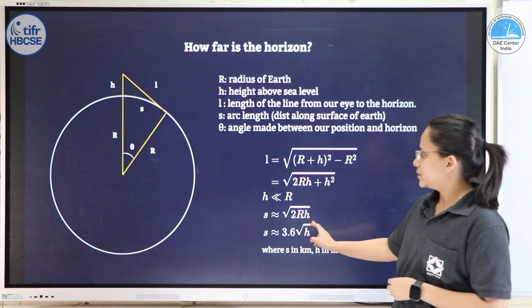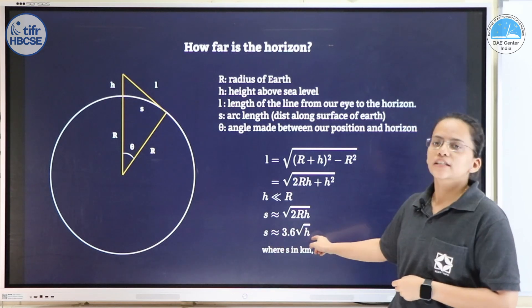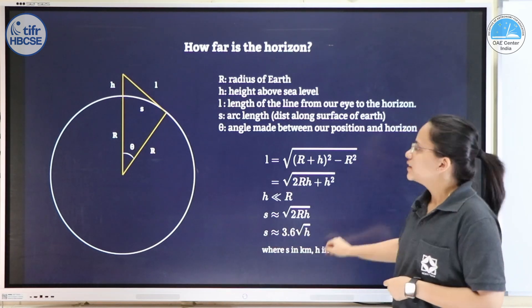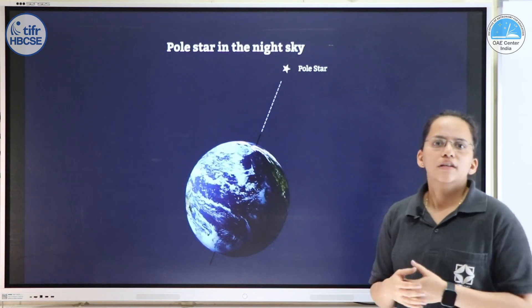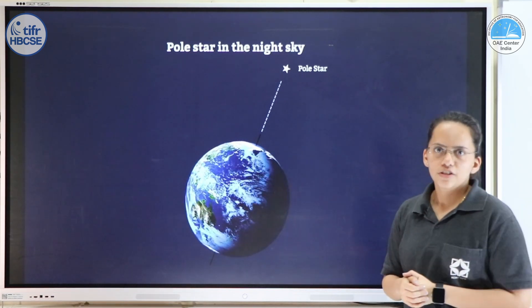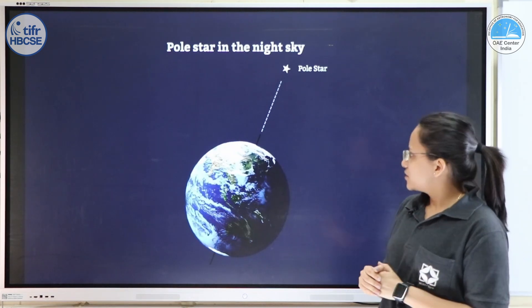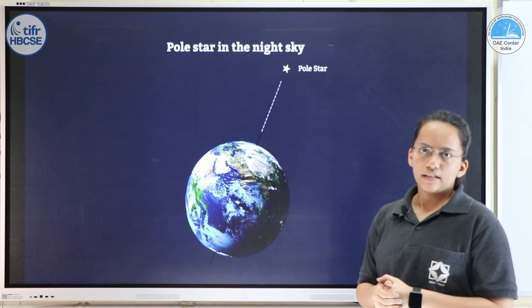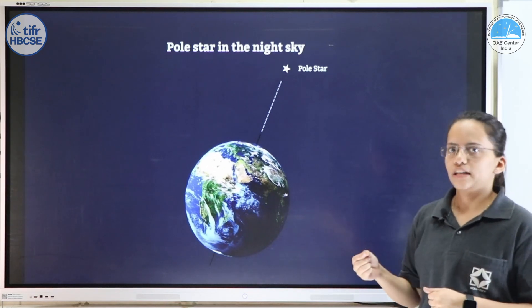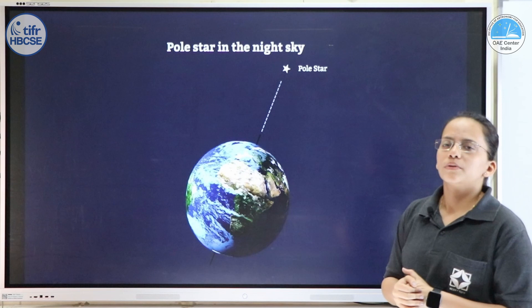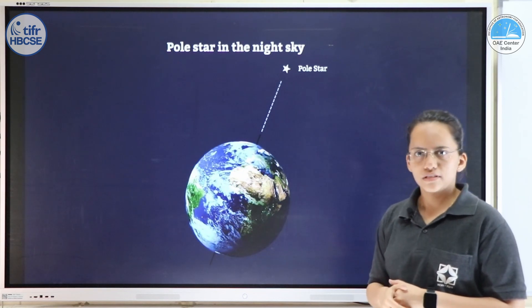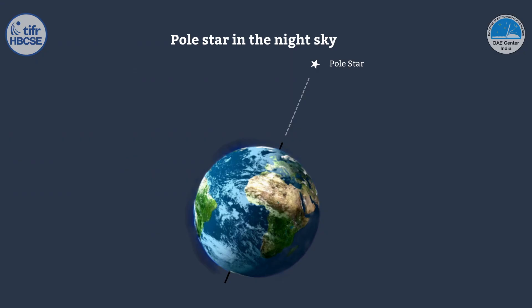An interesting outcome of this formula is that as h increases, s will also increase. Now, whenever you go out at night for sky observation, you might be interested in knowing direction. The earth rotates around a fixed rotational axis, which is actually pointing towards the star we call the pole star or Polaris. In the northern hemisphere we are lucky to have a star aligned with our rotational axis; in the southern hemisphere that is not the case.